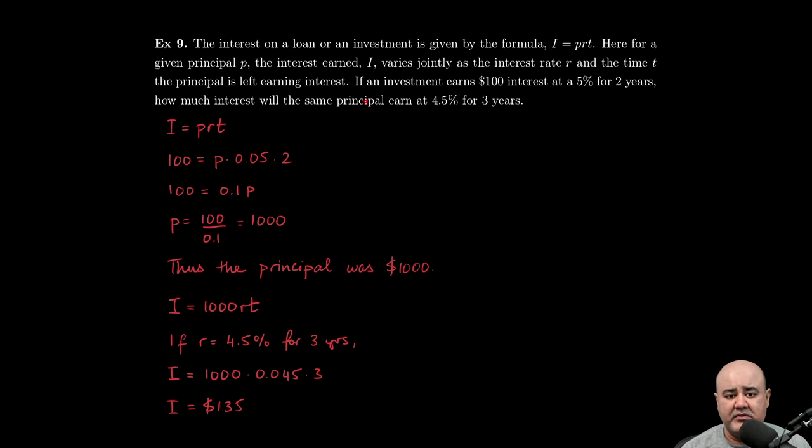So we're given some values here. We're told that if an investment earns $100 of interest at a 5% rate for two years. So we have $100 for I, 0.05 represents 5%. Remember, anytime you're using a percentage in a formula, you have to convert it to decimals first. So 5% converted to decimals will be 0.05 times the time period of two.